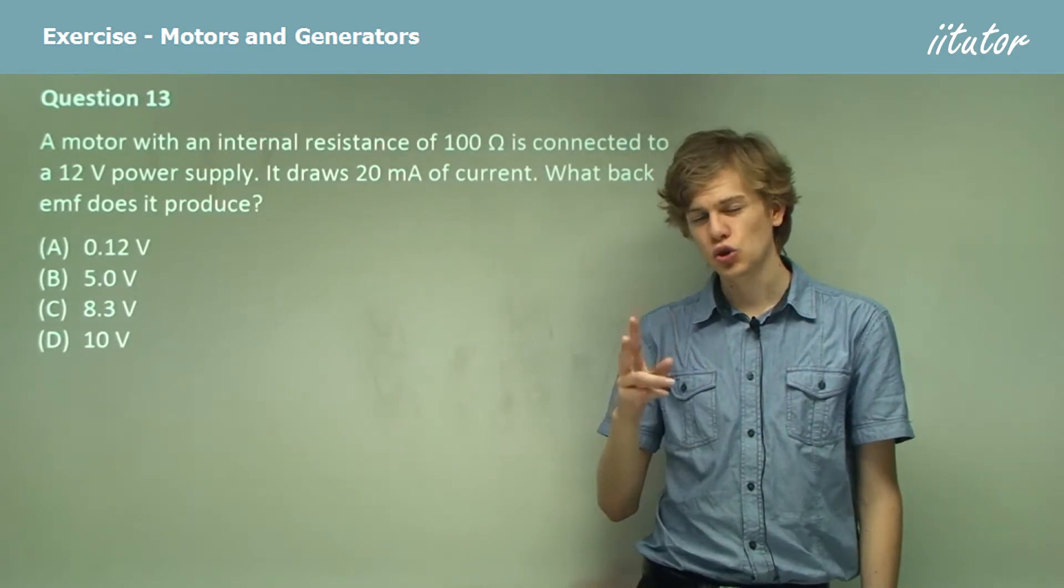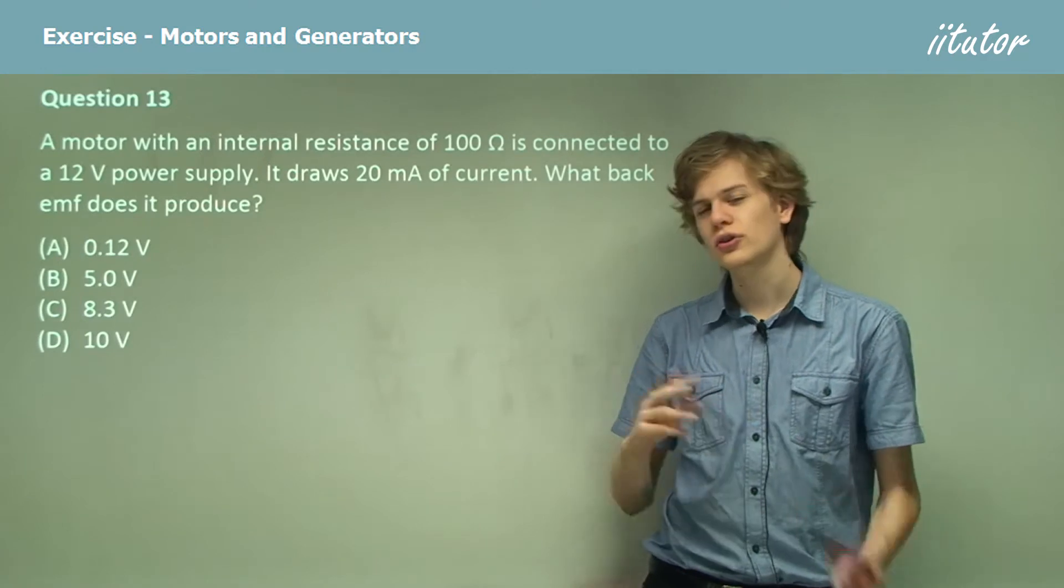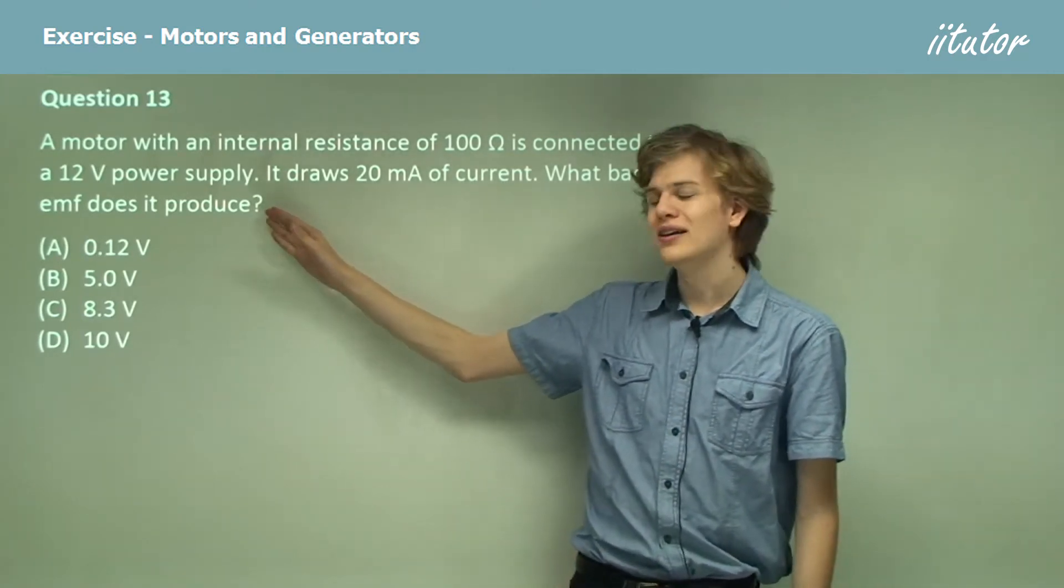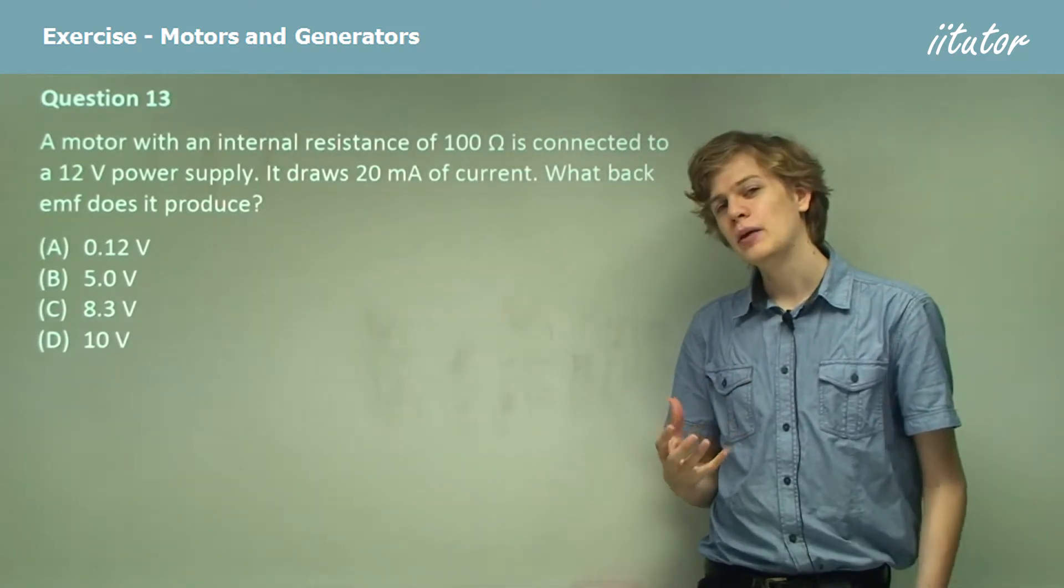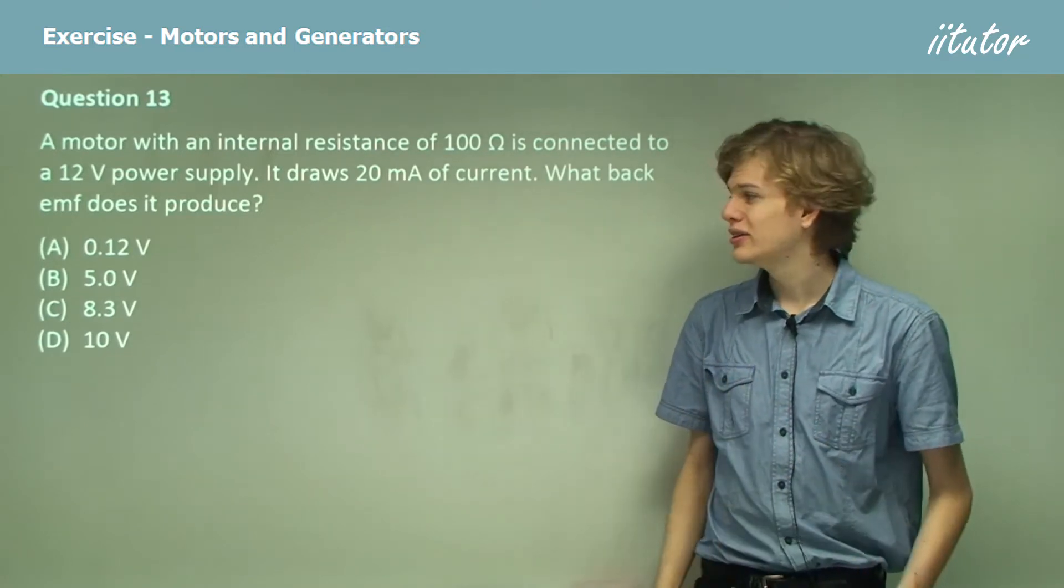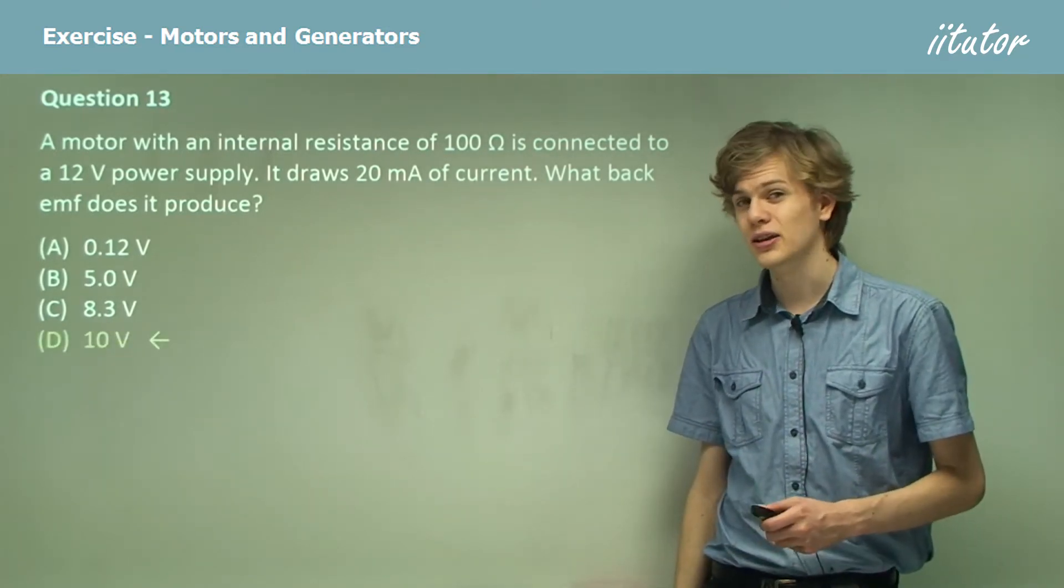So we have only 2 volts of voltage across the coil. If our 12 volt power supply is only producing 2 volts, that means there must be a back EMF of 10 volts. So D is the correct answer.